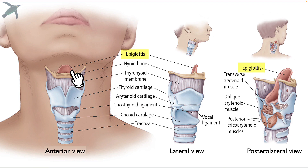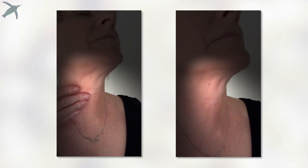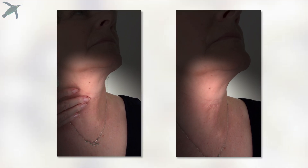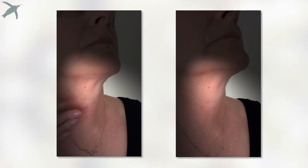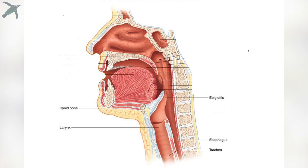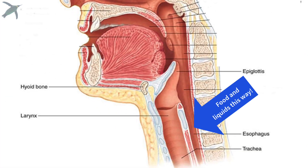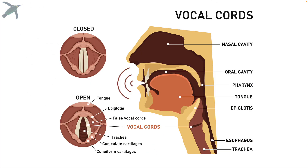The epiglottis is tissue which will tilt — you can feel this whole structure tilting when you swallow — and that will direct food and water down the esophagus and keep it out of the trachea. The larynx also includes the vocal cords. Air is passed up from the trachea, and the vibration of the vocal cords gives us our voice.